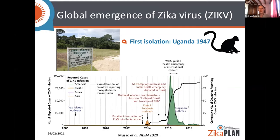In 2007, Zika virus was responsible for a relatively large outbreak on the island of Yap in Micronesia. In the following years, it caused other outbreaks in islands of the Pacific Ocean, namely New Caledonia and French Polynesia. In 2014, Zika virus reached Brazil, where it was introduced and then spread until it was responsible for a massive outbreak throughout Latin America and the Caribbean.